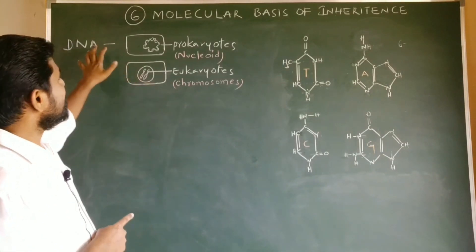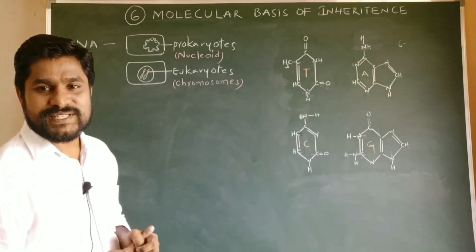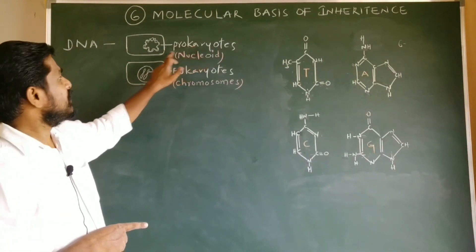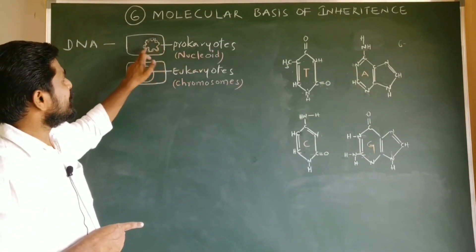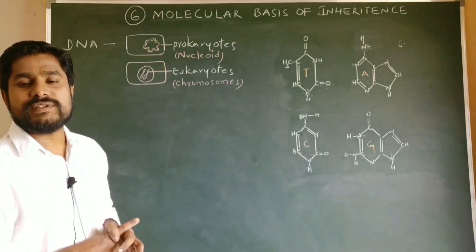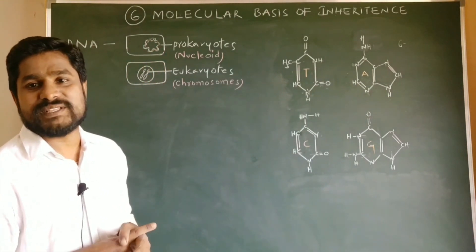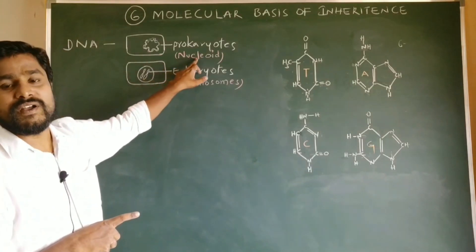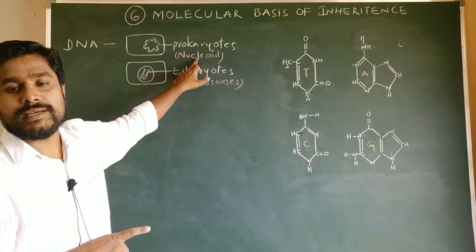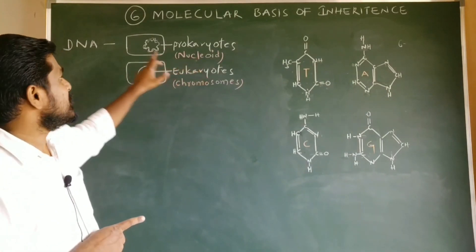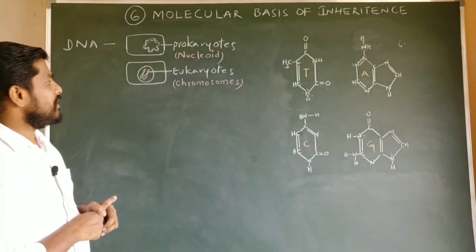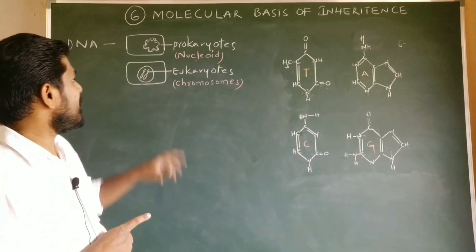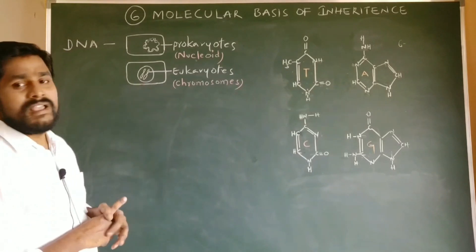The genetic material DNA is nakedly present as a nucleoid in the case of prokaryotes. This covalently closed circular DNA, nakedly present in the cytoplasm of prokaryotes, is called a nucleoid or genophore. The same genetic material DNA in the case of eukaryotes is present within the nucleus of a cell.